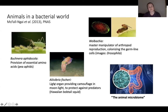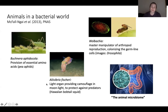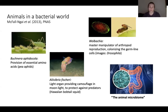Another interesting example is the bobtail squid, which has actually become a bit of a model for symbiosis research. The bobtail squid carries a specialized light organ that is filled with bacteria, and these bacteria generate light. By doing that, they provide camouflage for the squid when it goes hunting for prey at night.